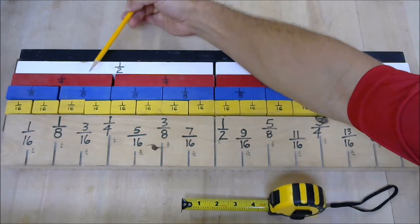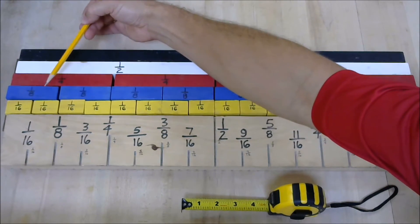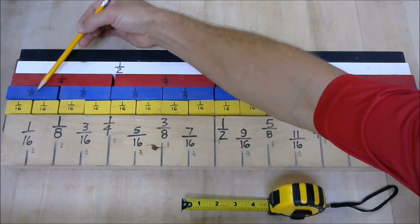To find half of one-fourth, we double four to get eight. Half of one-fourth is one-eighth. To find half of one-eighth, we double eight to get 16. Half of one-eighth is one-sixteenth.